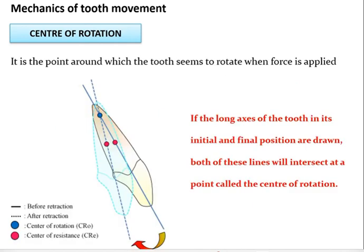Center of rotation is the point around which the tooth rotates when force is applied. When you apply force to a tooth, the tooth rotates in a particular direction around this point. If you consider the long axis of the tooth in its initial and final positions, both lines will intersect at a point — that is the center of rotation.